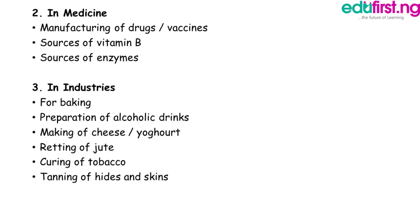In industry, the first use is for baking. Yeast is useful in baking industries as it causes dough to rise in bread and other food processing. Preparation of alcoholic drinks: yeast is also useful in the brewing industry as it is used for the fermentation of sugar to produce alcohol. Making of cheese and yogurt: certain bacteria are used in food processing such as cheese, vinegar and yogurt.